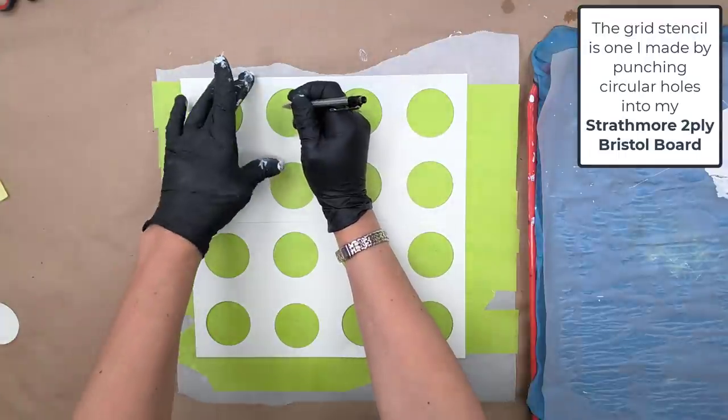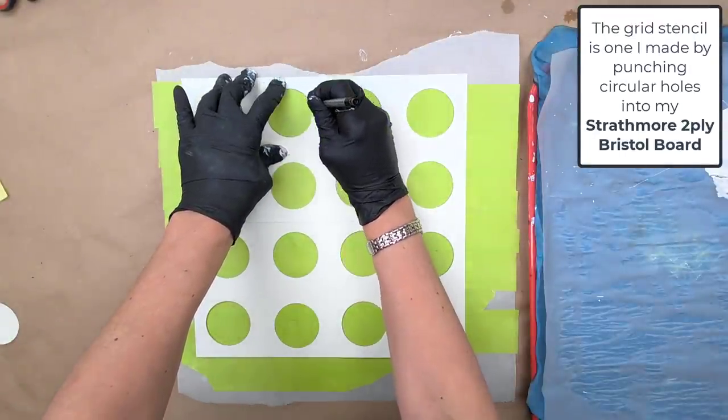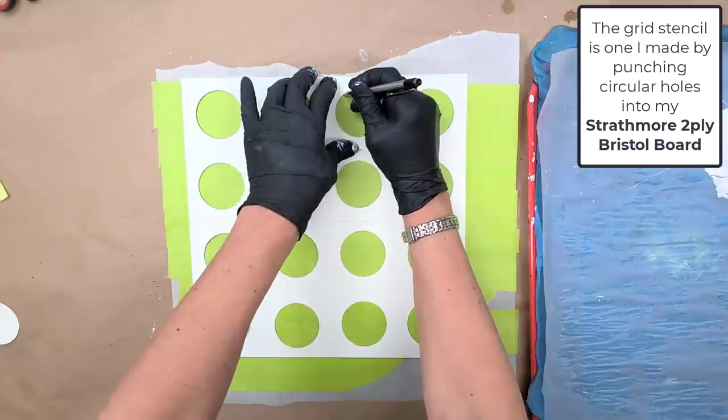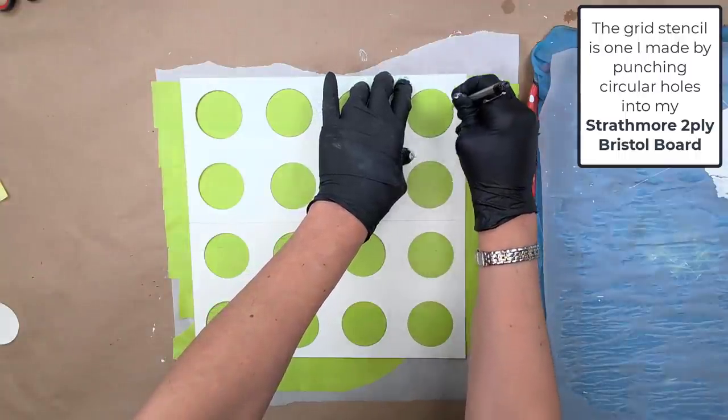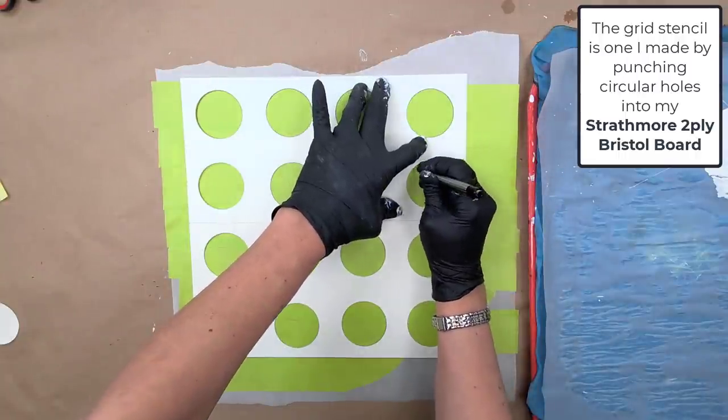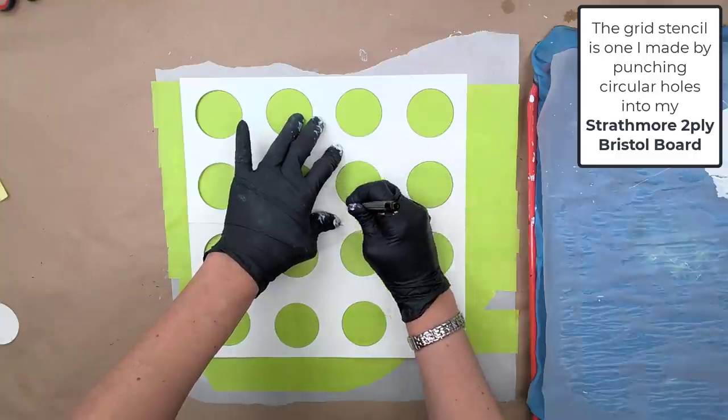This is my original Bristol stencil that I cut out of just the Bristol board. It's Strathmore Bristol board two-ply, and I use this a lot to make my own stencils. The good thing is you can use your stencils again and again. You don't have to buy them.